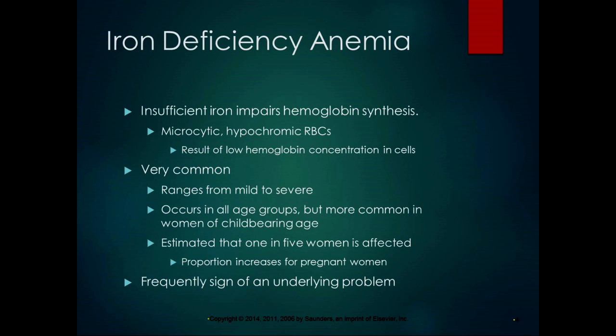An estimated one in five women is affected, and the proportion increases for pregnant women because they're building a new human being with their own body and cells — a real strain on resources. It occurs more often in women of childbearing age because they're bleeding on a regular basis and losing red blood cells. Iron deficiency anemia is frequently a sign of an underlying problem, so it's important to determine the specific cause of the deficit.